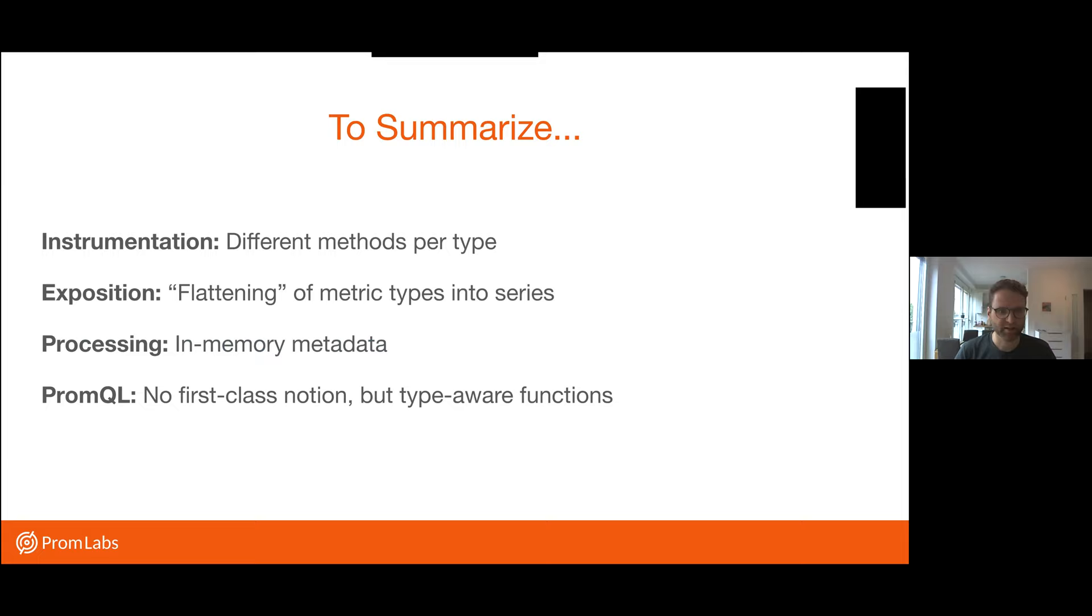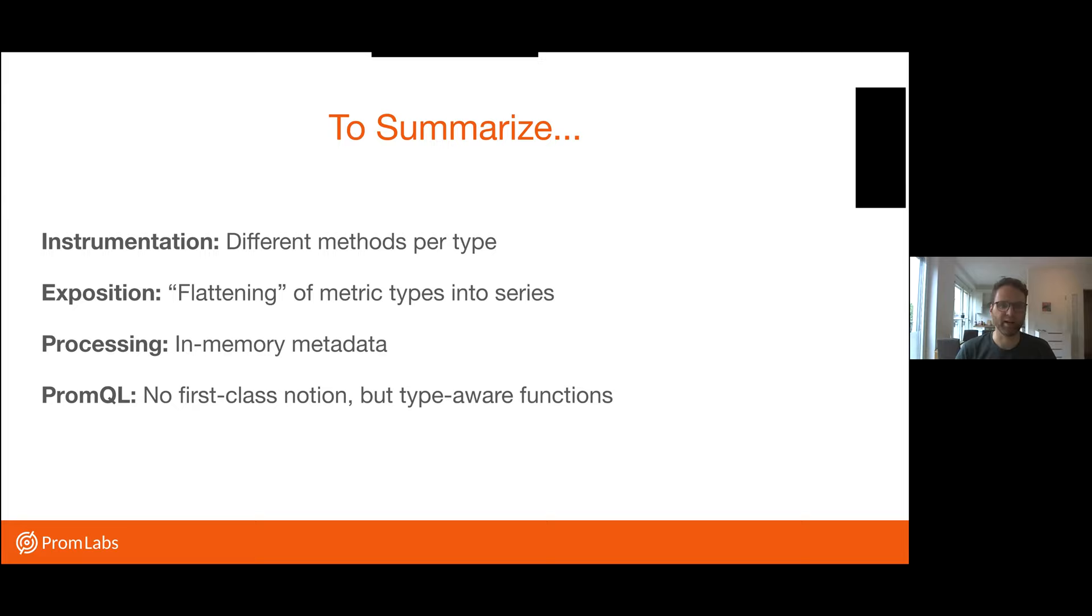Just to summarize, I would say in the instrumentation part of Prometheus, that's where you encounter these different metric types the most. The exposition format already knows mostly about the normal flat time series model of Prometheus. In the processing and storage part, it's mainly about in-memory metadata for some UIs at the moment. And in PromQL, there are type aware functions, but there's no direct first class notion of these types. I hope this was useful. And let me know if you have any questions. Thank you, Julius.